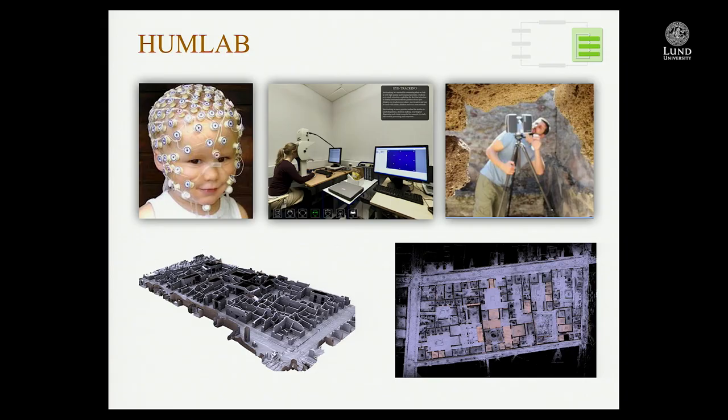Another field that also collects a lot of data is the Humanities Lab, which we have been working with a lot to set up their kind of workflow with data. That data comes from sensors — face and eye tracking — but also, lately, 3D scanning, which has been both computationally and storage-wise a new field for us at the Supercomputing Center.